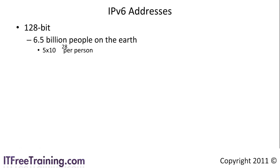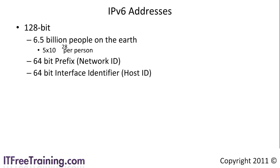The 128 bits are broken down into two parts. The first part is the 64-bit network ID, or in IP version 6 terminology, this is known as the network prefix. The second part is the 64-bit host ID, or in IP version 6 terminology, this is known as the interface identifier. Since one host can have multiple interfaces, IP version 6 uses the term interface ID rather than host ID. The interface ID is generated from the 48-bit MAC address of the network card, or randomly generated. With the change in address size also comes a change in how the IP addresses are formatted.